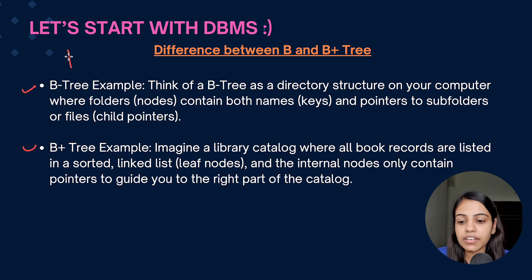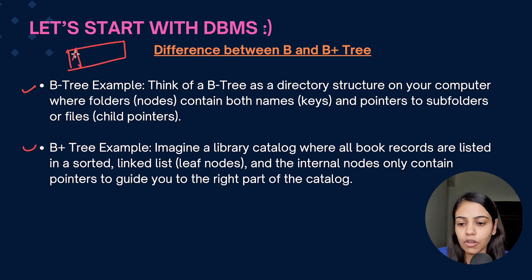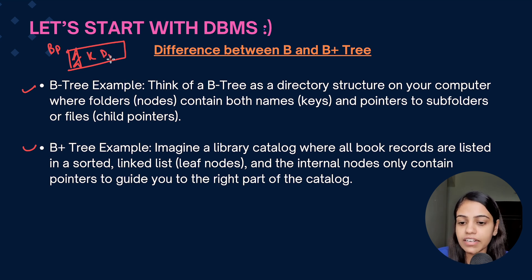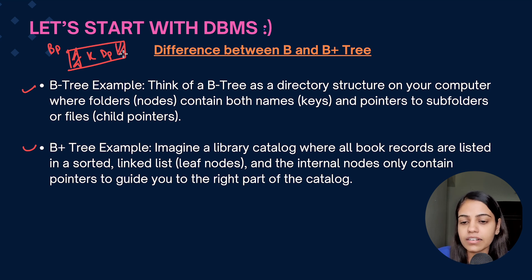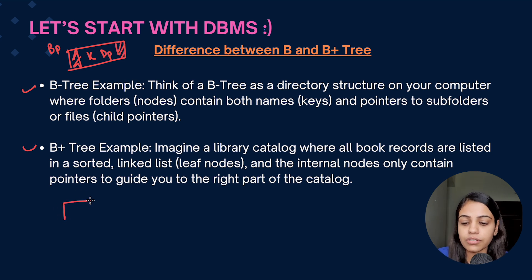In a B-tree, all the nodes have the same structure. There is a block pointer which contains the address of the child node, then there is a key, then there is a data pointer which points to the location where data is stored in the hard disk or secondary memory, and again there are some block pointers.